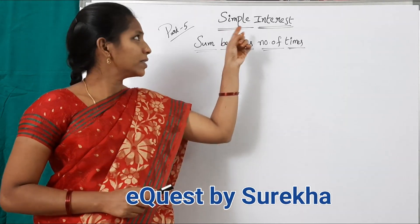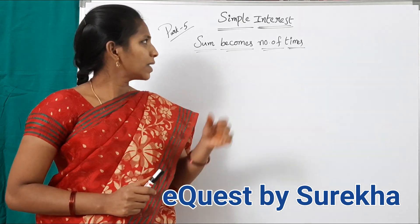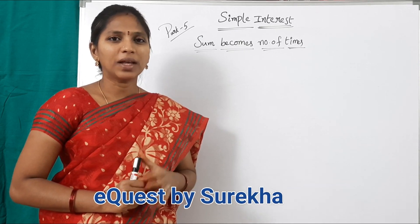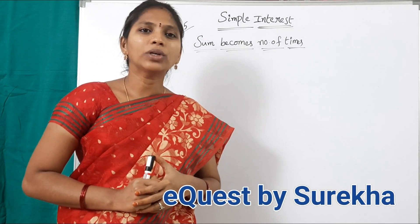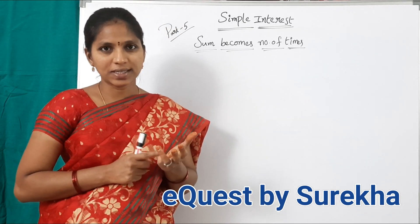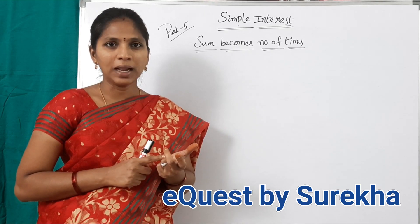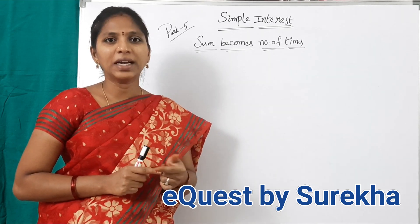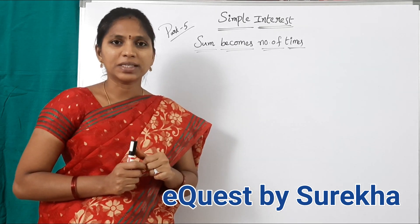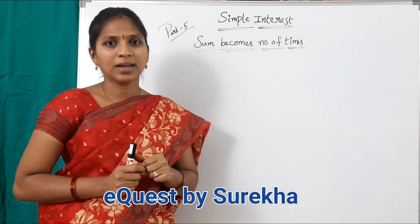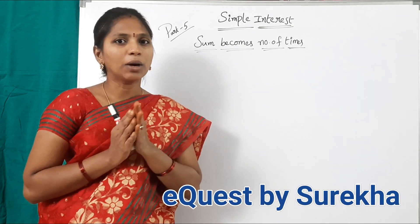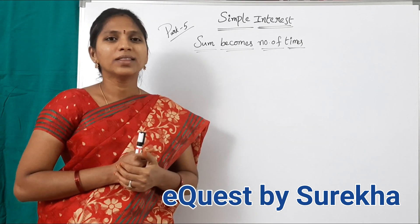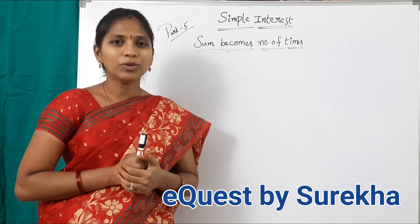Hi everyone, welcome to the topic Simple Interest Part 5. In this video we discuss some 'becomes number of times' questions — a very important topic. There are 3 cases: Case 1 is finding how many years (time period) when rate of interest and the relation between principal and amount is given. Case 2 is finding the rate of interest when time period and the relation between amount and sum is given. Case 3 is finding, if the sum is doubled in 5 years, then in how many years the sum becomes 10 times. Let us move to the first question.